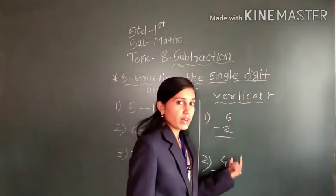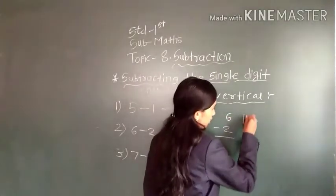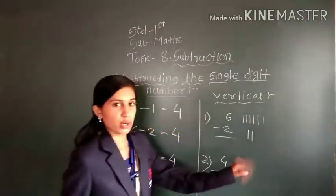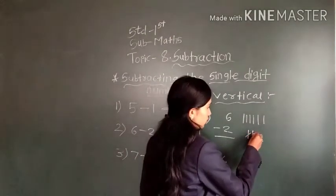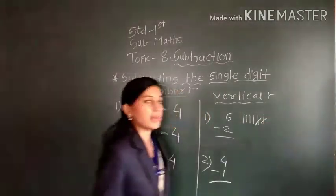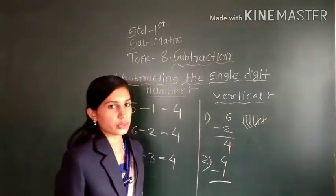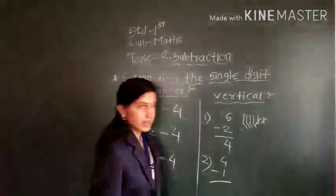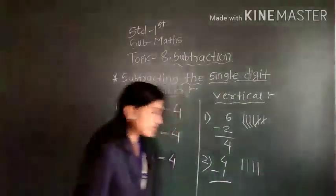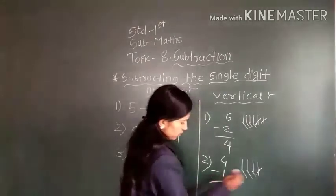This is the vertical subtraction. Six minus two — we draw six lines: one, two, three, four, five, six. Now subtract two: one, two. Count remaining: one, two, three, four — so we write four. Now four minus one — draw four lines: one, two, three, four. Subtract one. Count remaining: one, two, three — so we write three.